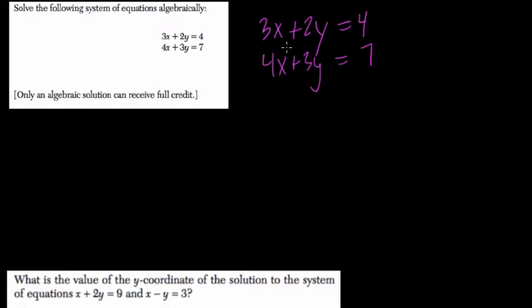Look at the coefficients 3 and 4, and 2 and 3, then multiply one of the equations or both so that those two coefficients are equal. So 3 and 4 are not equal, but if you multiply the first equation by 4 and the second one by 3, they will be equal.